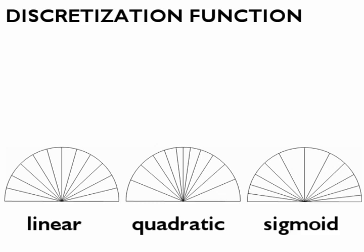Raw tilt sensor readings are generally continuous, either as a degree of tilt or measurement of gravity. To be used as discrete input, the raw values must be manipulated, and there are several ways to accomplish this, including a straight linear division into discrete blocks or various non-linear relationships, such as the quadratic and sigmoid functions.